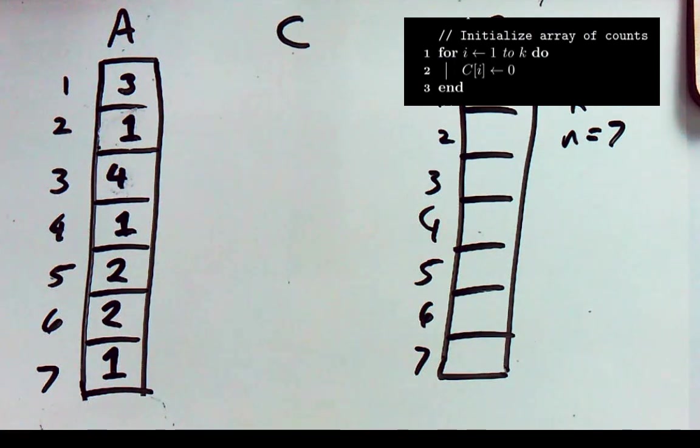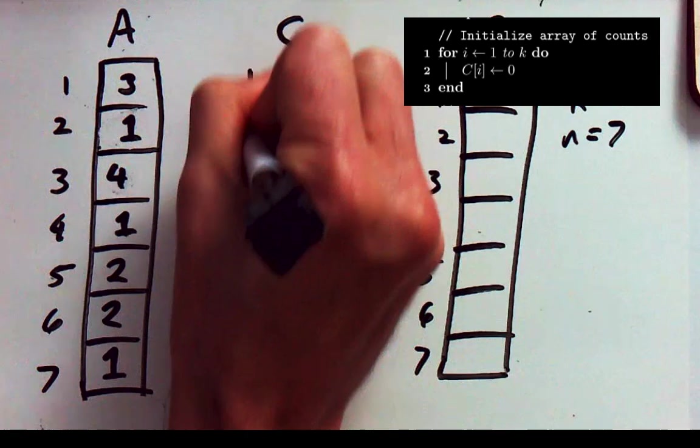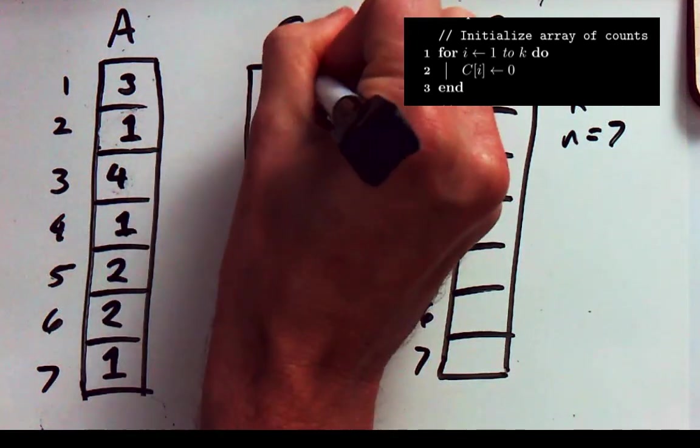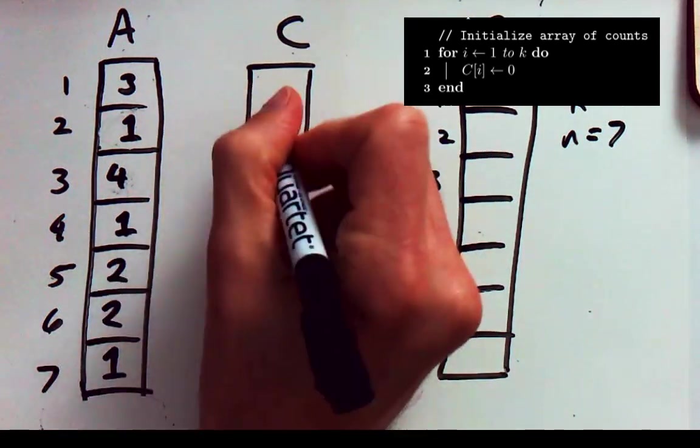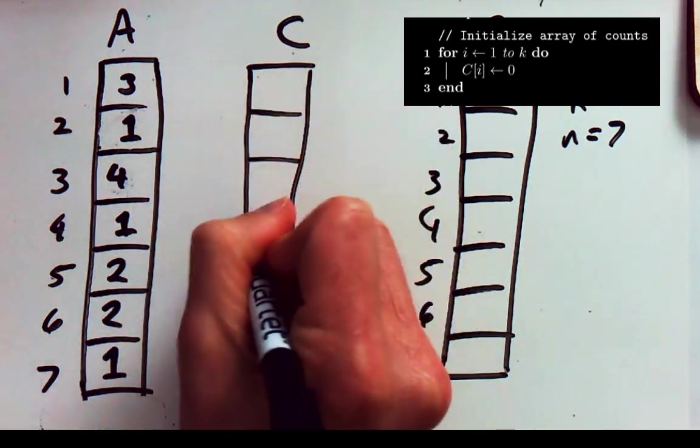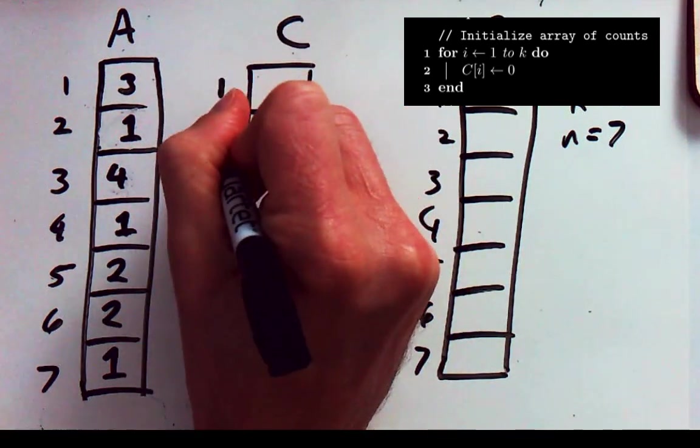Okay let's go through the different phases of our algorithm. So the first phase sets up the array C. So the array C is basically for keeping counts of the values in our array. So again we've got four different values in our array. So it's going to have indices 1 through 4.